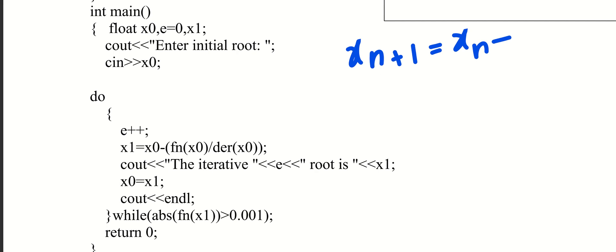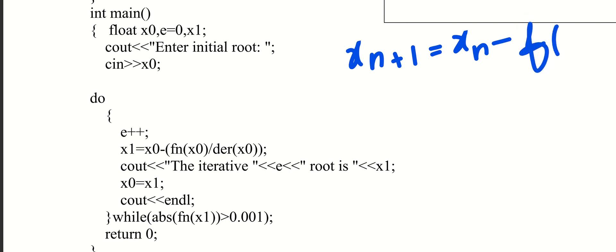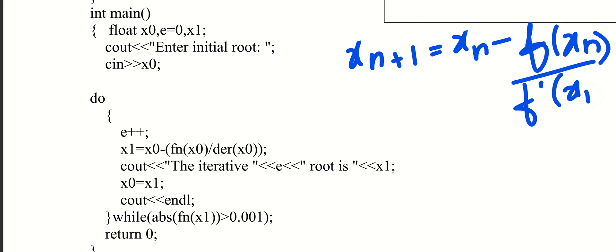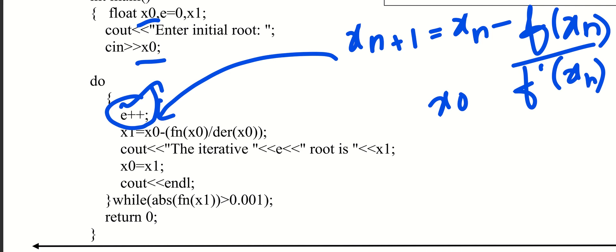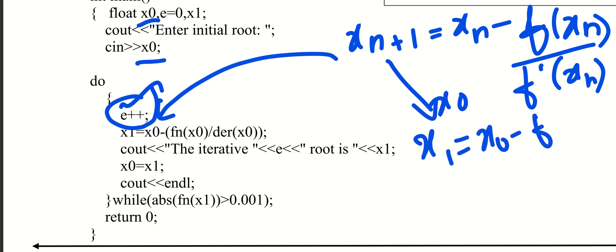Now I have the Newton-Raphson equation: xn minus f of xn divided by f dash of xn. First, declare and read the initial root x0. Then apply the formula: x1 is equal to x0 minus f of x0 divided by f dash of x0.